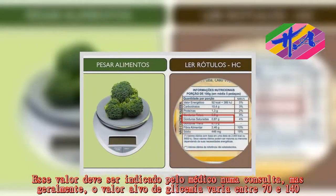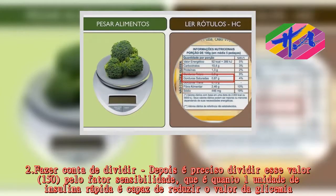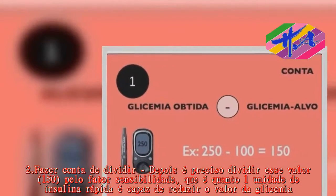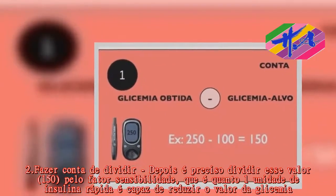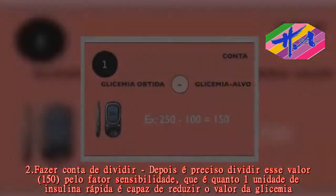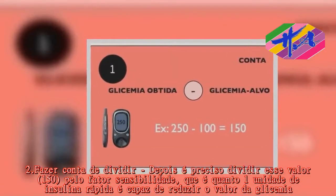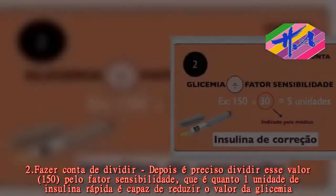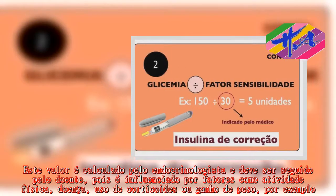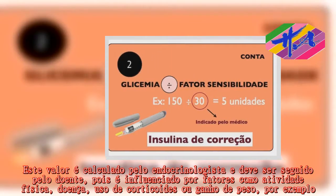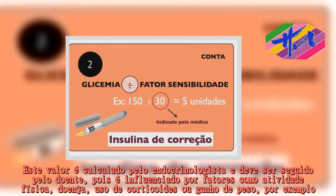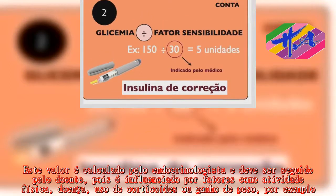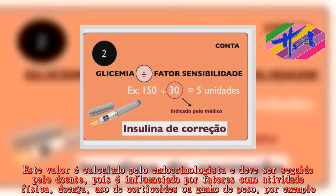Passo 2: é preciso fazer a diferença entre o valor obtido, por exemplo 150, pelo fator de sensibilidade, que é quanto 1 unidade de insulina rápida é capaz de reduzir o valor da glicemia. Este fator é calculado pelo endocrinologista e deve ser seguido pelo paciente, pois é influenciado por fatores como atividade física, doença, uso de corticoides ou ganho de peso, por exemplo.